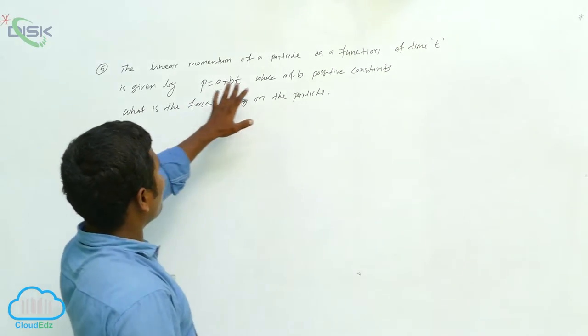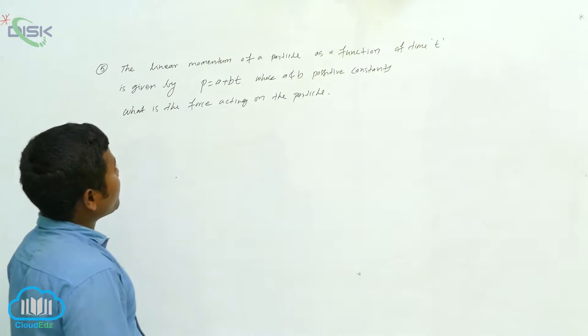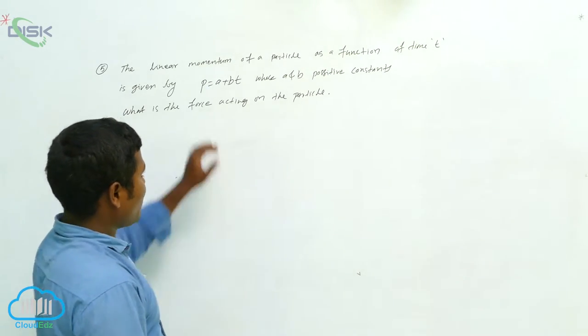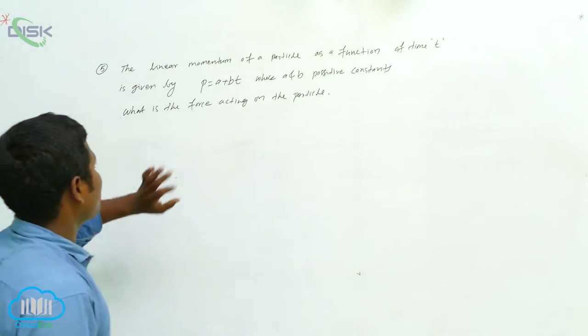Okay, this is the last problem. The linear momentum of a particle as a function of time t is given by p equals a plus bt, where a and b are positive constants. What is the force acting on the particle?